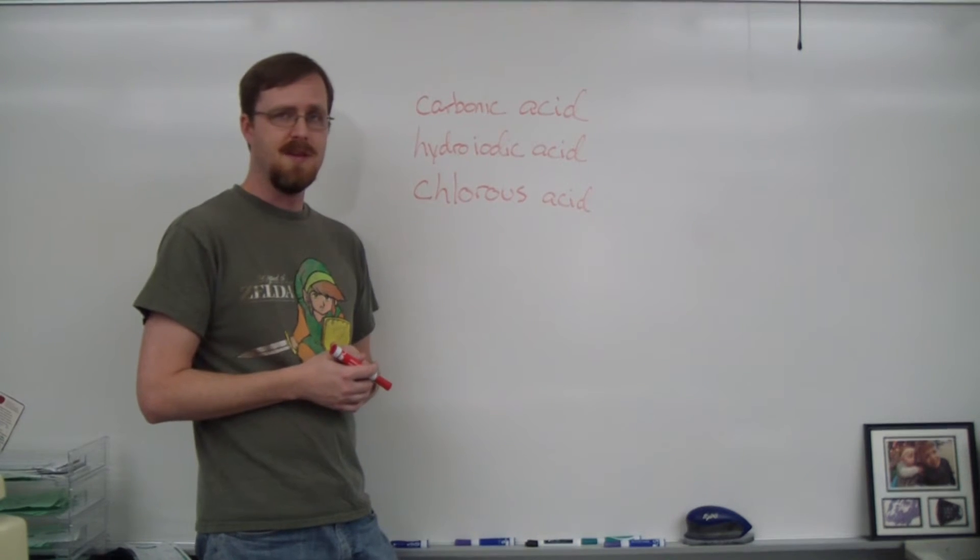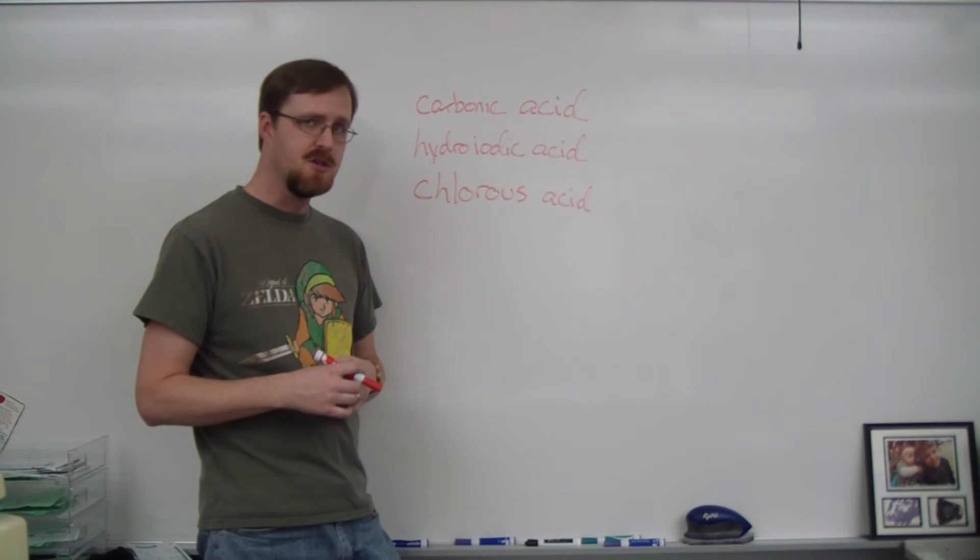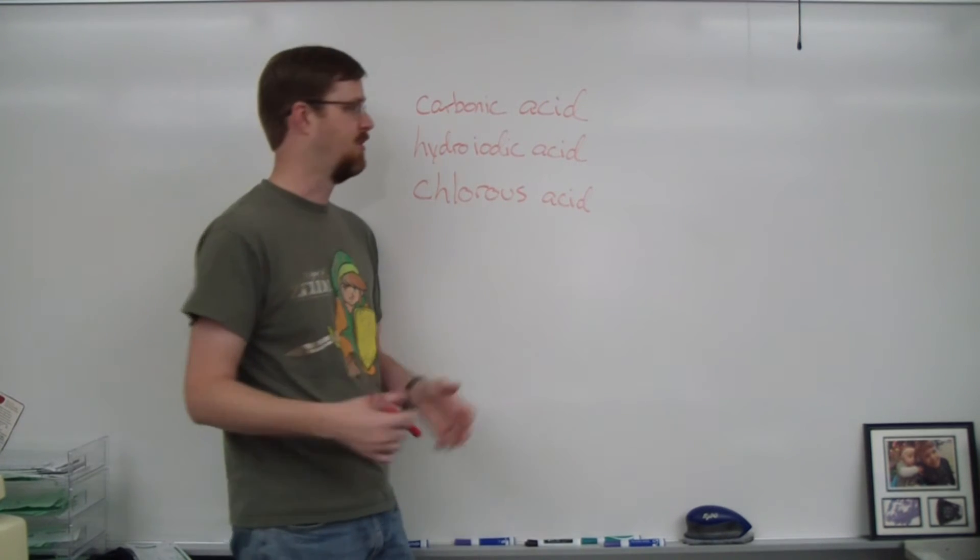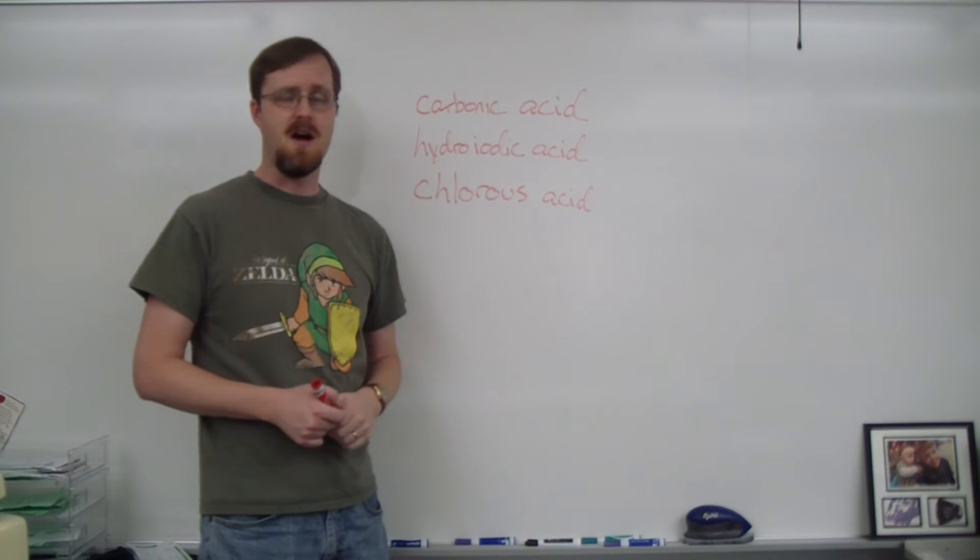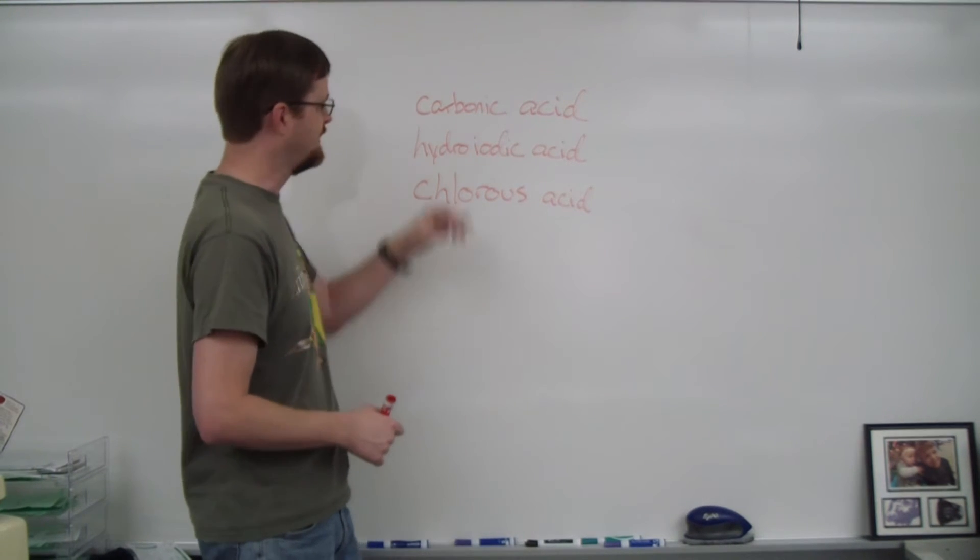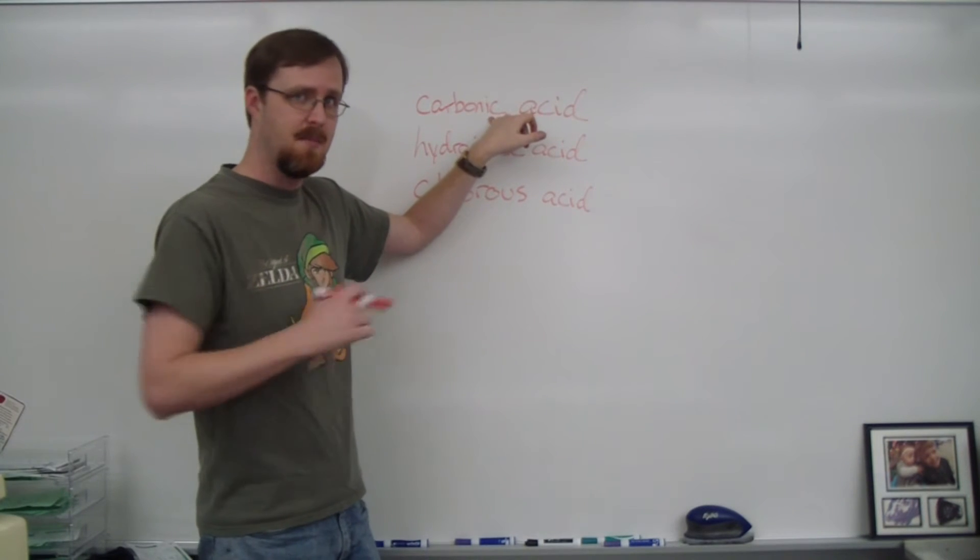So all we got to do is remember the naming rules that I just mentioned, plus remember the ionic charges for each group. And we just write our formulas like normal. So for example, we have carbonic acid. Well, this does not start with hydro, which means that this is one of the polyatomic acids. It ends in IC, which means that this is an Ate polyatomic.